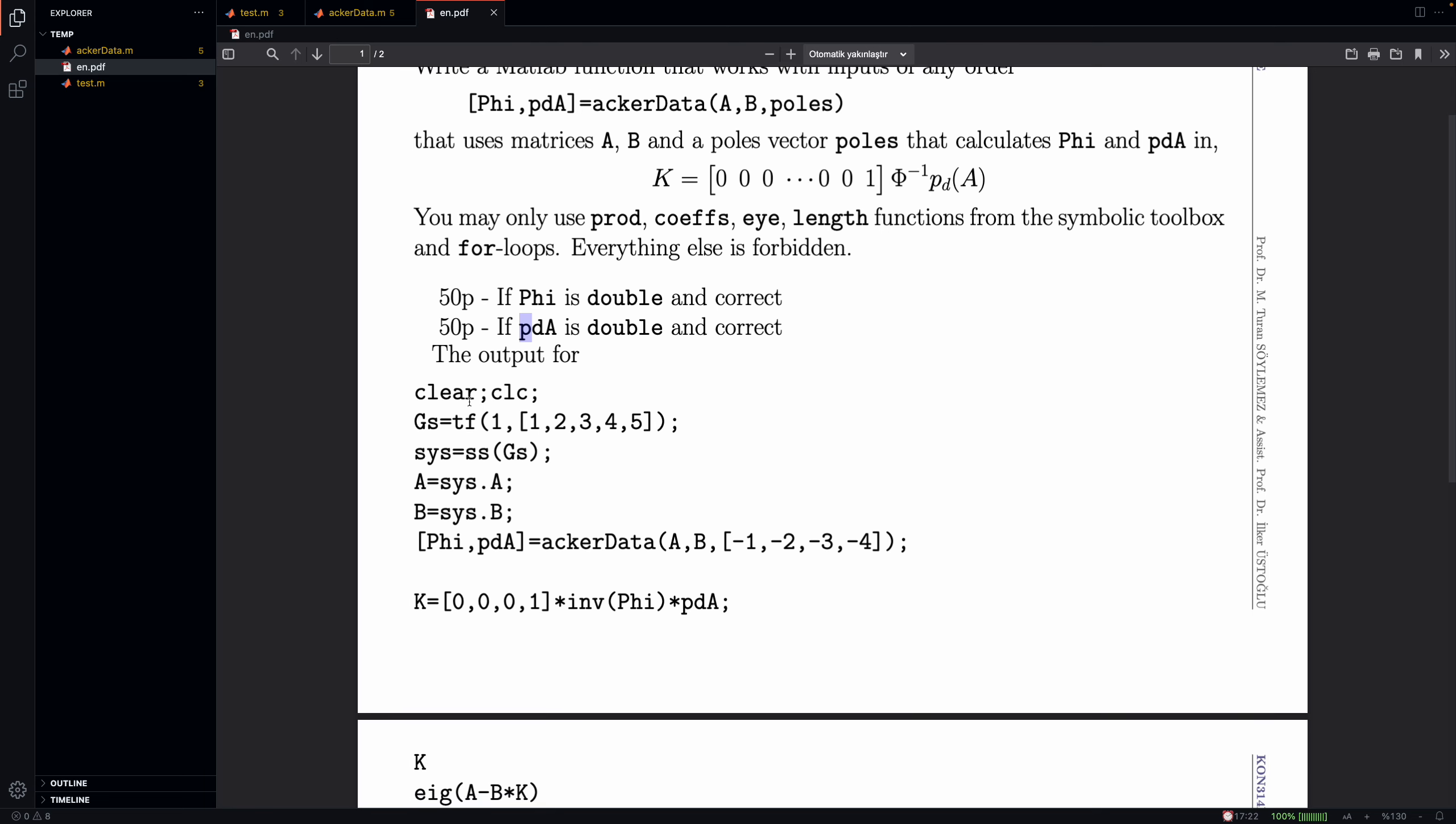We have a test script, and you can see this test script is defining a system like this, which is a fourth order system. Then we obtain A and B and pass that to our function ackerdata,